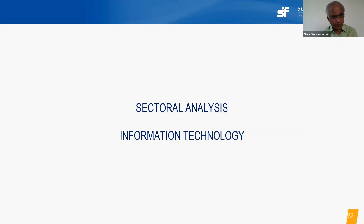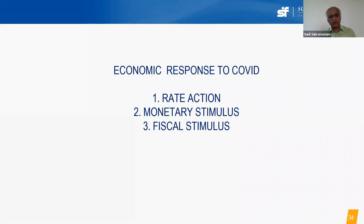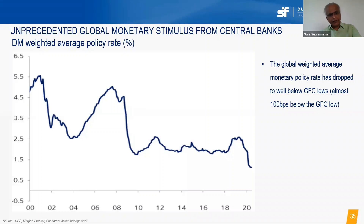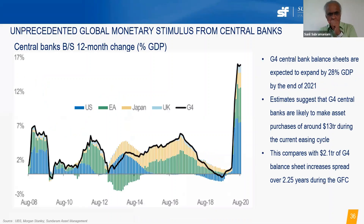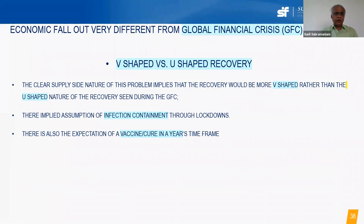Moving to the IT sector, which is more connected to the world than to the domestic economy. You can't judge the IT sector without looking at global conditions. Globally, the economic response was three-pronged: strong rate cuts, monetary stimulus with money printing, and fiscal stimulus supporting corporates and jobs. Weighted average policy rates have sharply dropped, the balance sheets of the top four countries expanded dramatically compared to the previous crisis, and fiscal deficits expanded enormously — the US fiscal deficit is set to touch 19% of GDP.